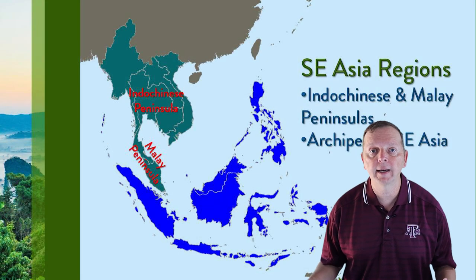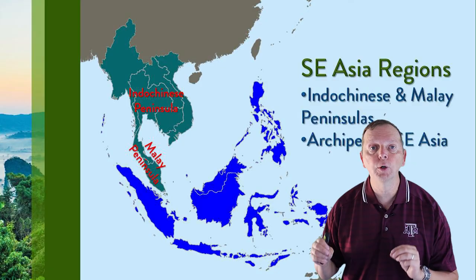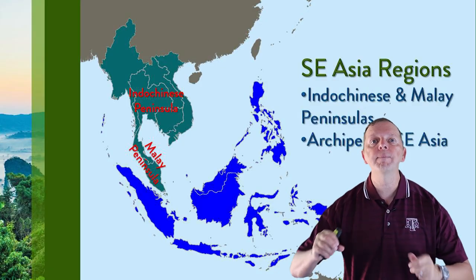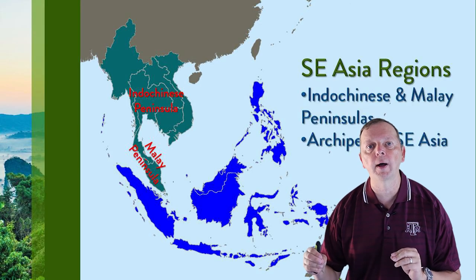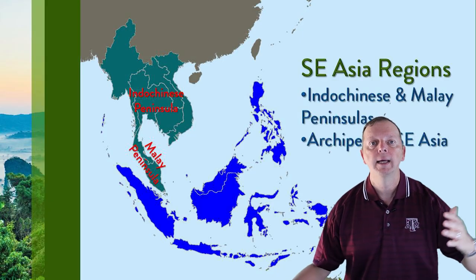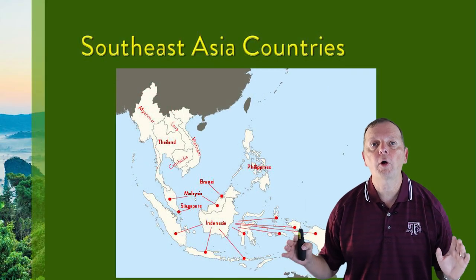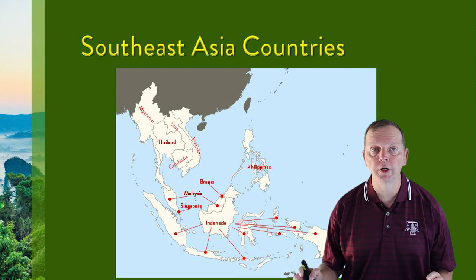The mainland of Southeast Asia is made up of the Indochinese and the Malay peninsulas. The term Indochinese comes from being in between India and China. In all, there are 10 countries we find in this region.